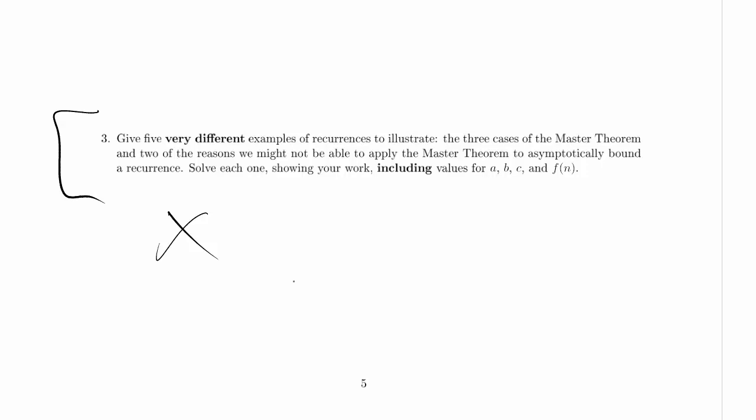What would I do for five very different examples of recurrences? Well, three of them are going to be the leaf dominated case, the root dominated case, and the unbalanced case. You certainly had better do at least one example of each of those. So probably the other two, I'm going to do two different ways that the theorem is not applicable.